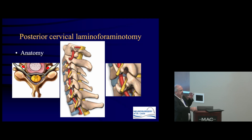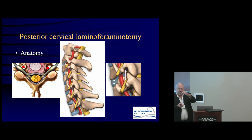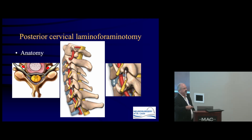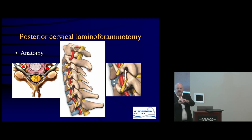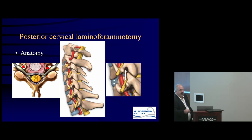The height of the foramen is dependent on the height of the disk. As the disk degenerates, the three-dimensional volume of the foramen similarly shrinks. This creates a relative contraindication: when the disk space is relatively collapsed, a foraminotomy cannot restore the rostrocaudal dimensions of the foramen, and an anterior approach might be better.